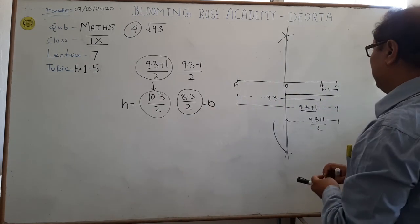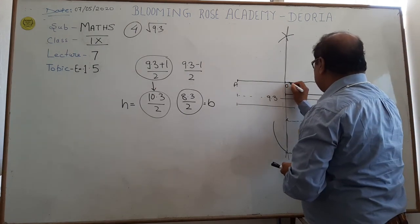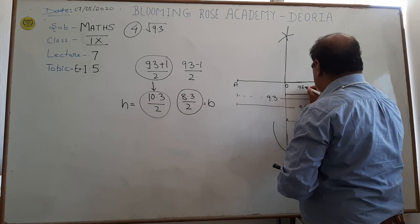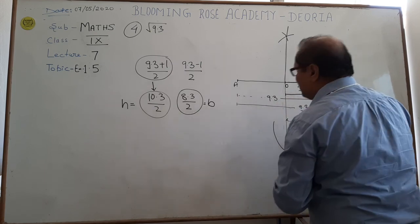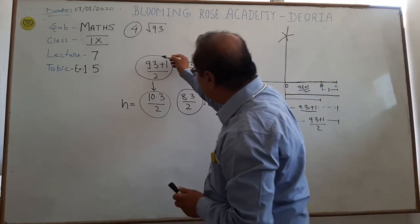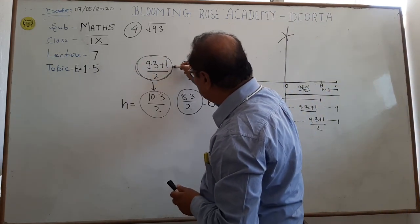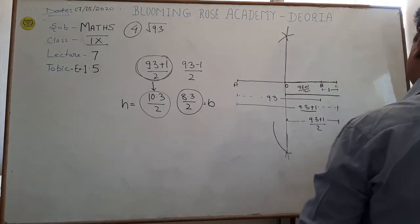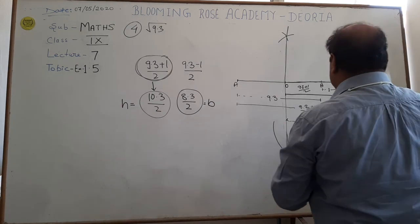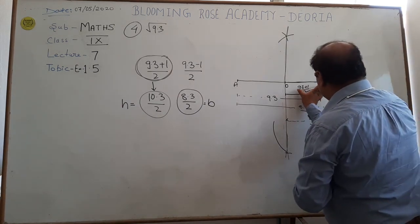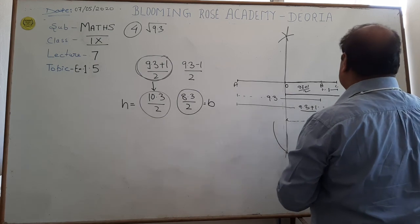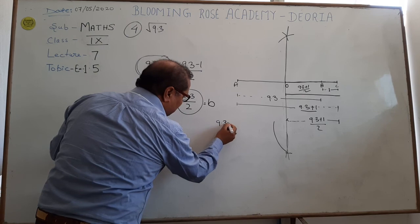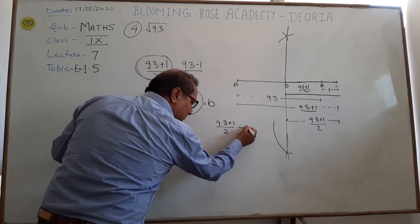Now, students can see here and here. This is 9.3 plus 1 and by half. This line is a hypotenuse. Similarly, students, if we have 9.3 plus 1 and by half, so students, if we have 1 minus, we have to subtract. So, you can see here, 9.3 plus 1 by 2.